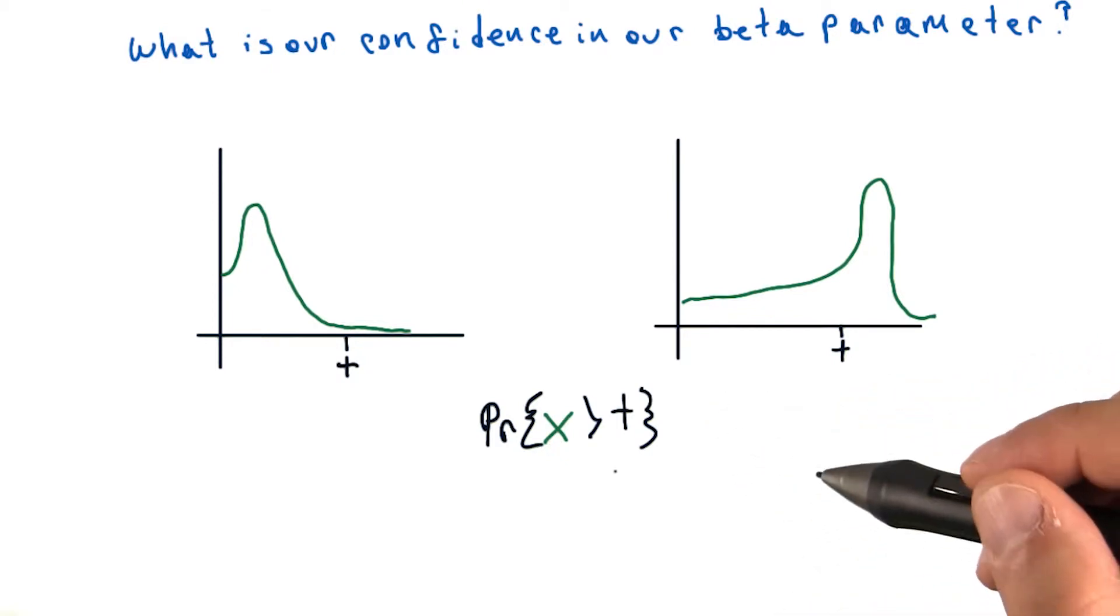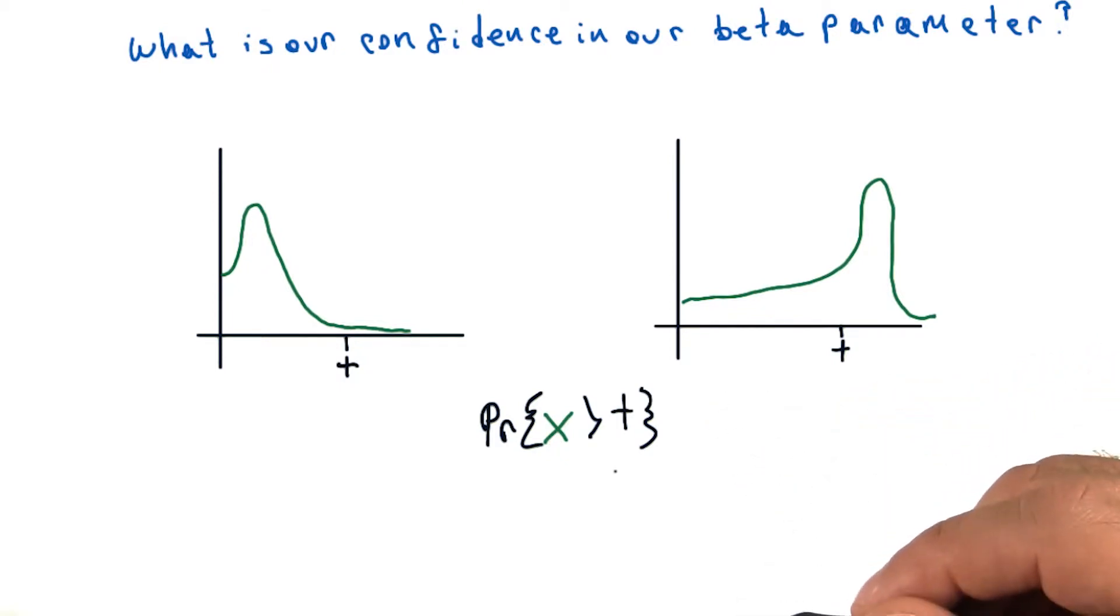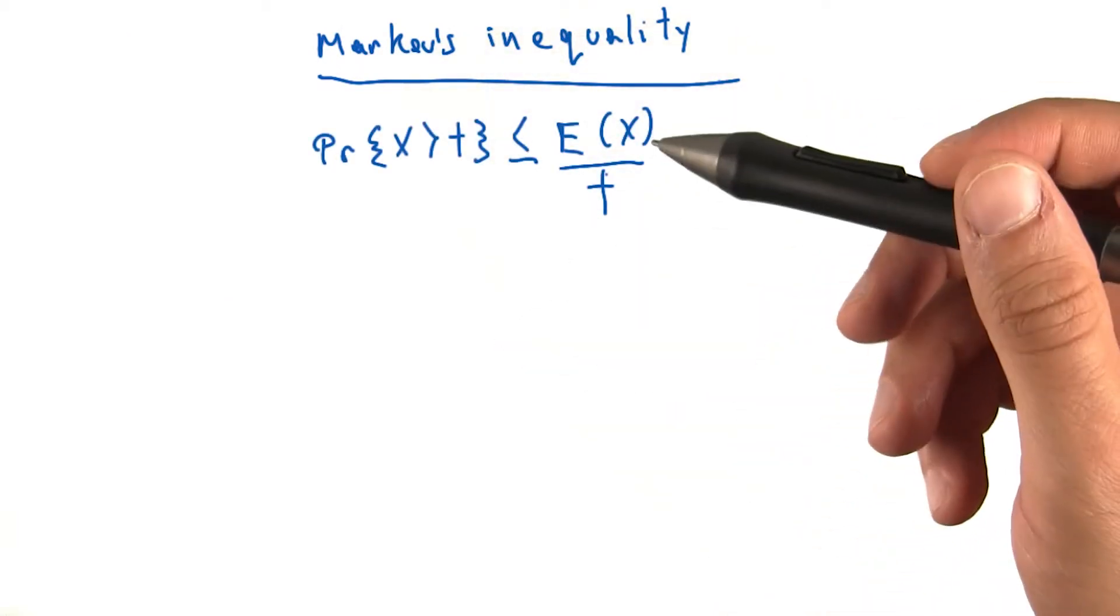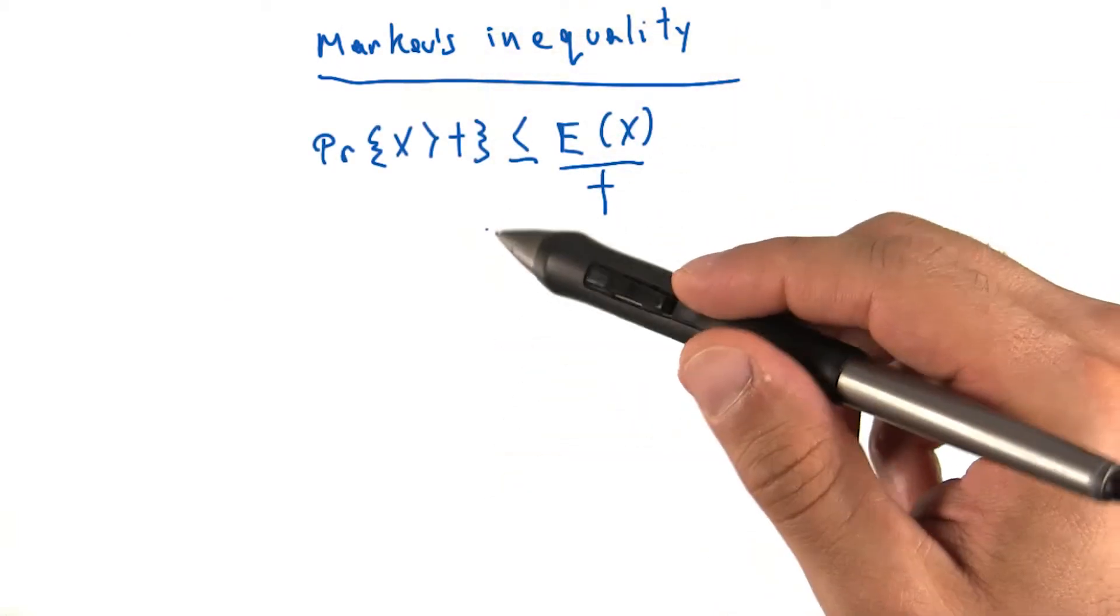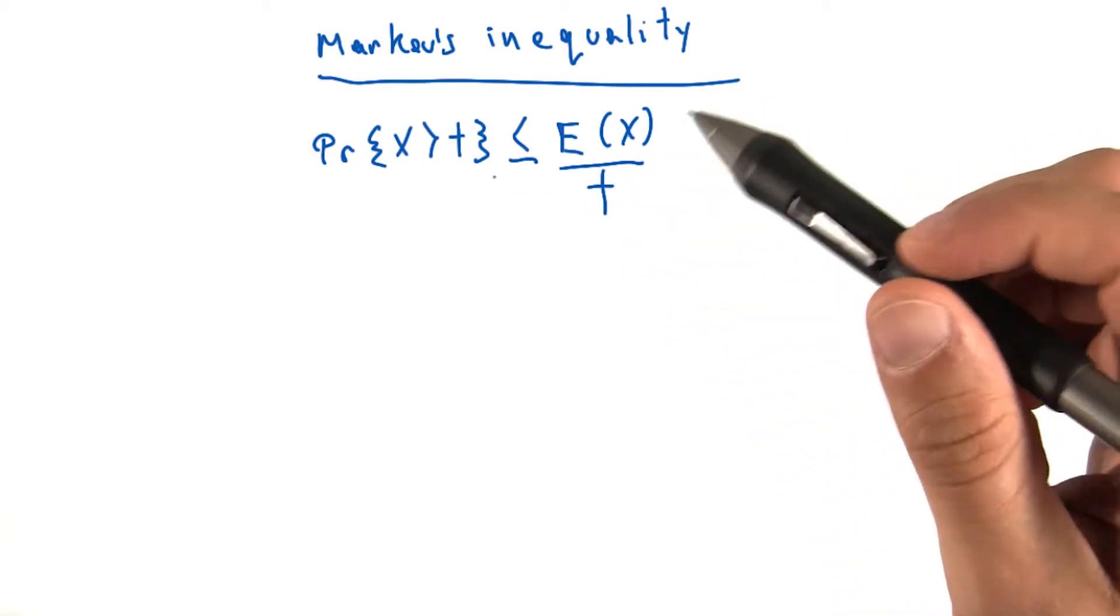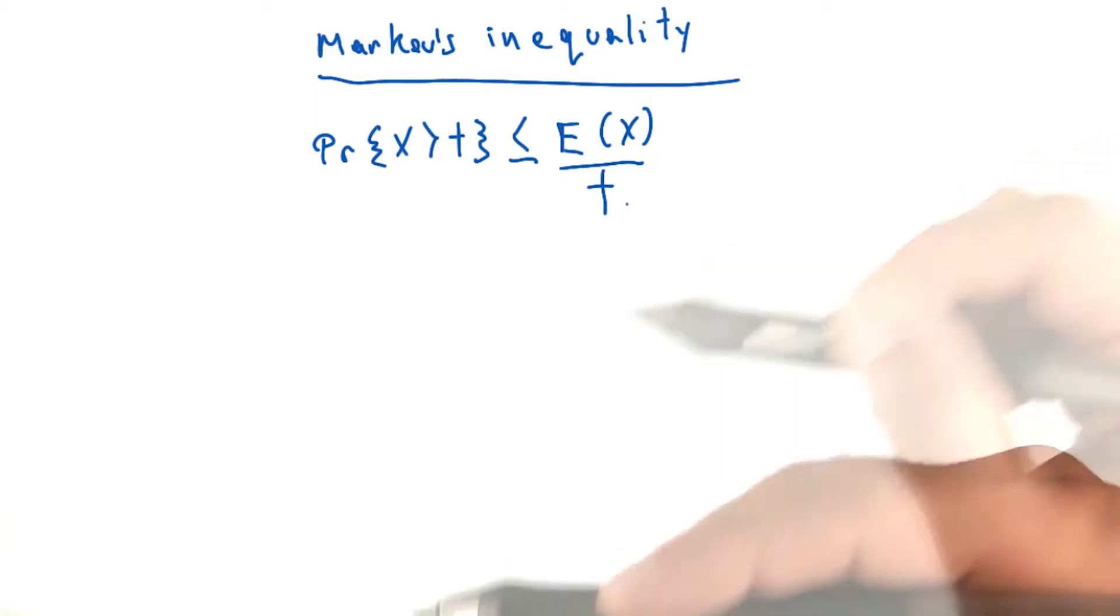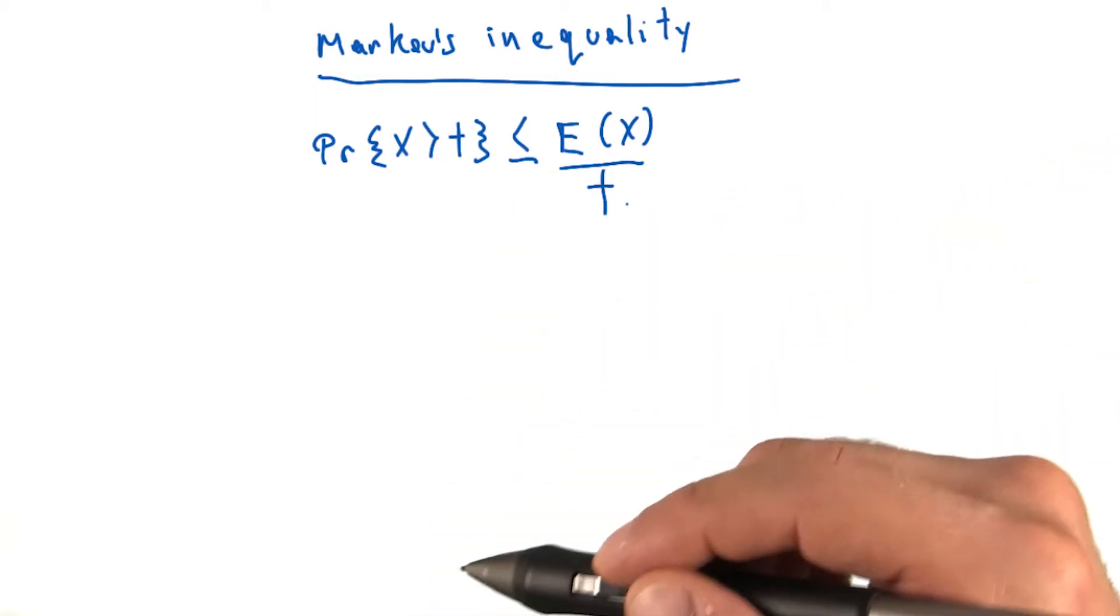There is an inequality called Markov's inequality, which quantifies this notion. Specifically, Markov's inequality says that for any random variable x, the probability that it is greater than t is less than or equal to its expectation divided by the number t. Now, for the derivation of this, please see a link in the instructor's notes.